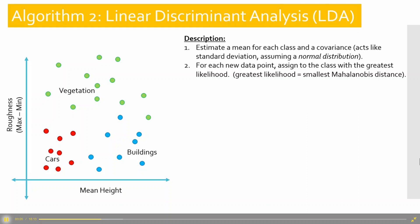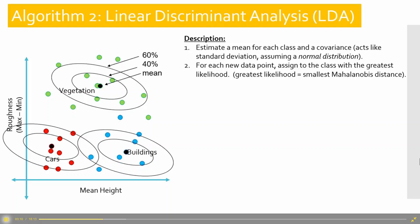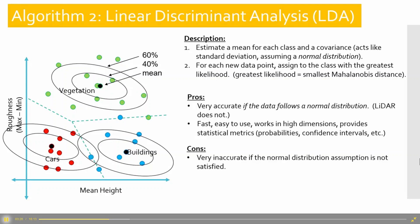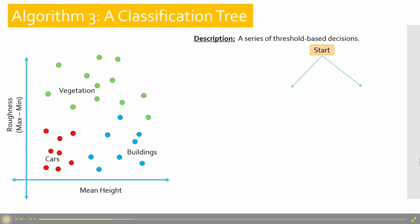With linear discriminant analysis, you need normally distributed data. You find the mean of your data, then find the distance out from where your data would be. You can take a new data point and see which mean it's closest to. This gives you really accurate lines showing which class to assign your data to, but you do need normally distributed data.